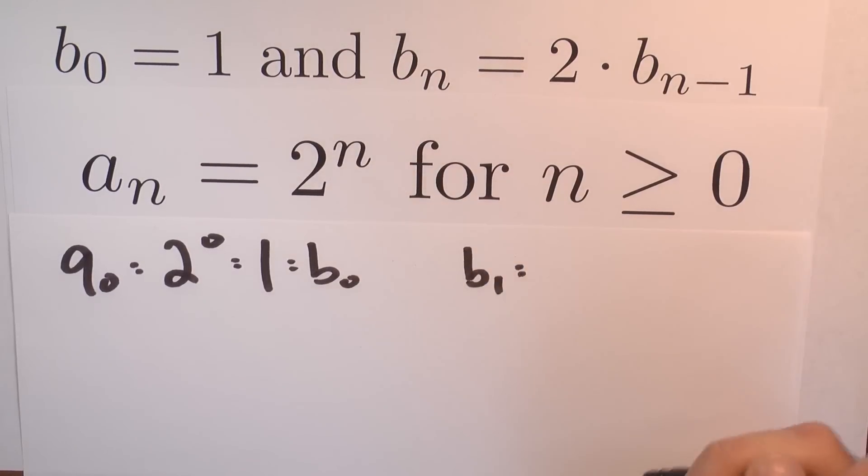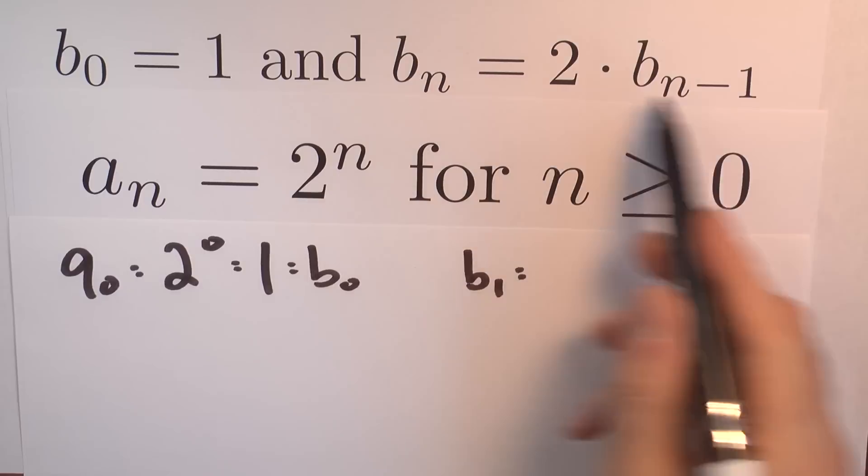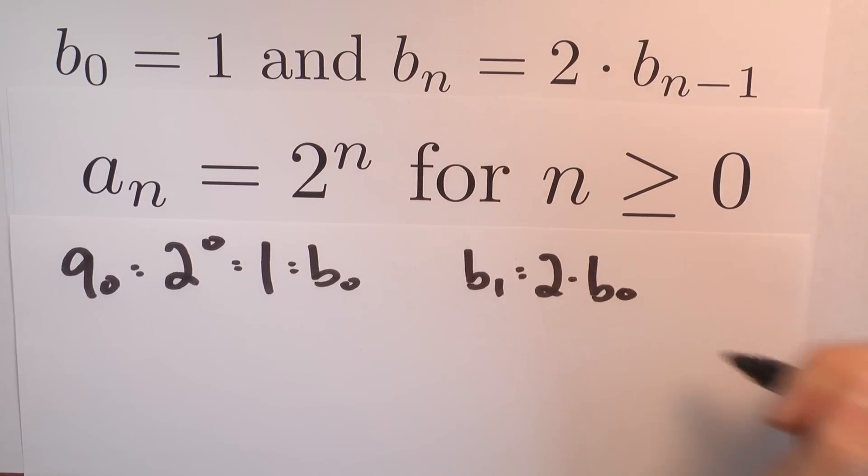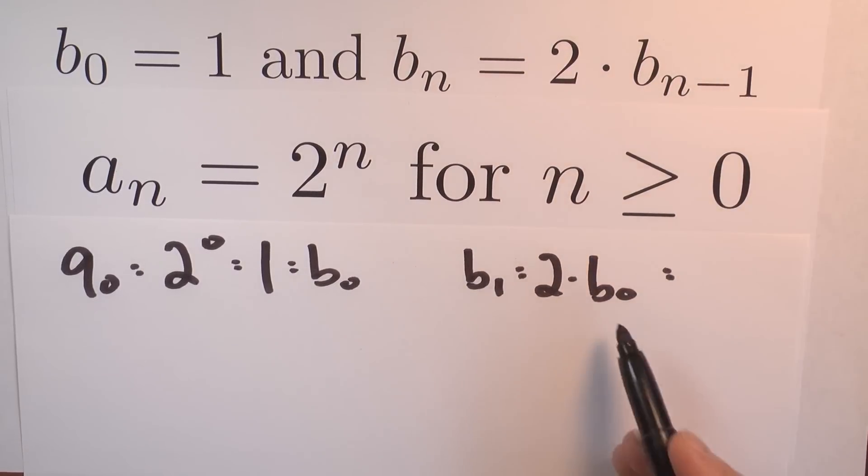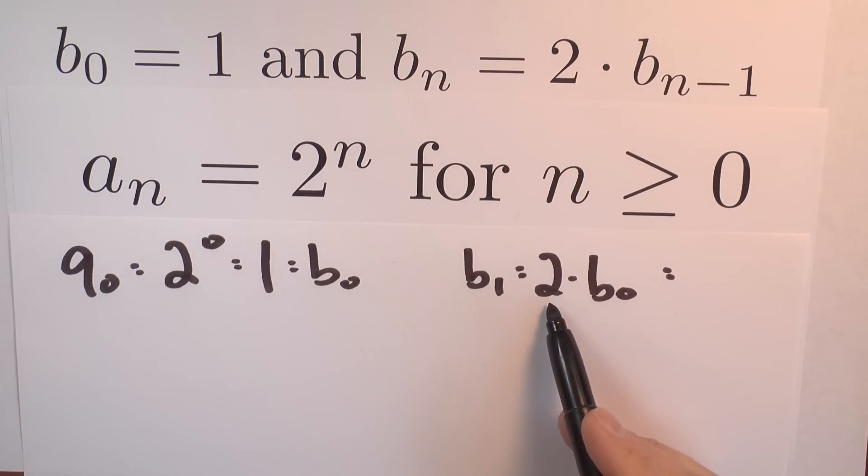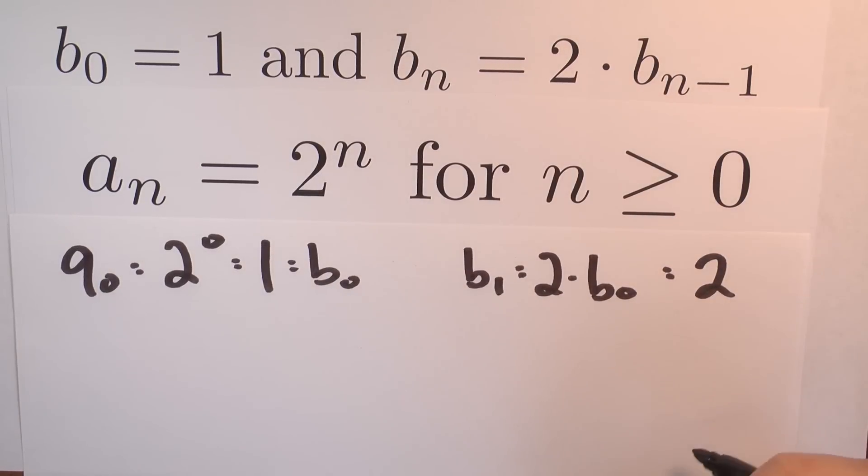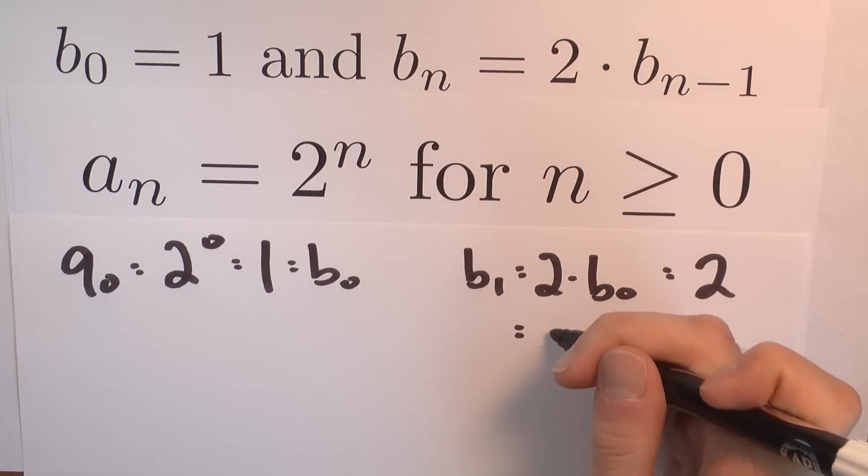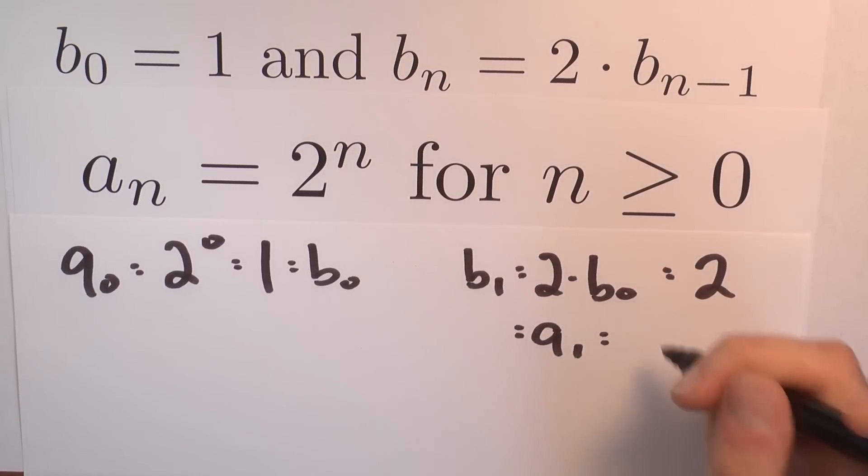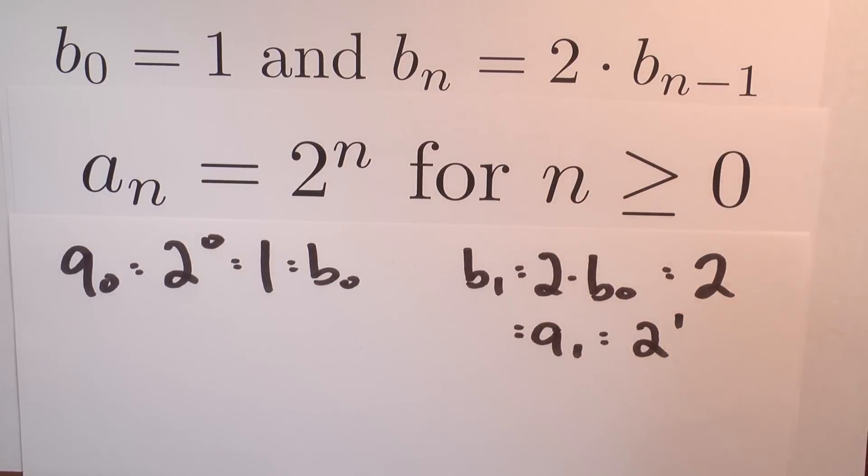B sub 1 is, using this recursive formula, twice B sub 0. B sub 0 is 1, so B sub 1 is 2 times 1, which is 2. And that's the same as A sub 1, which is, using this formula, 2 to the first power.